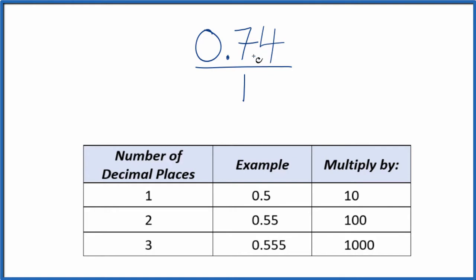We need to get this to a whole number. So we have two decimal places, 1, 2. With two decimal places, we're going to multiply by 100, like this here.